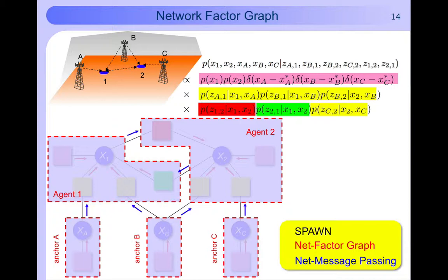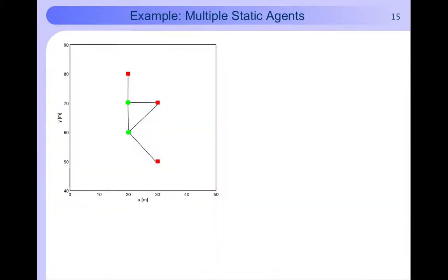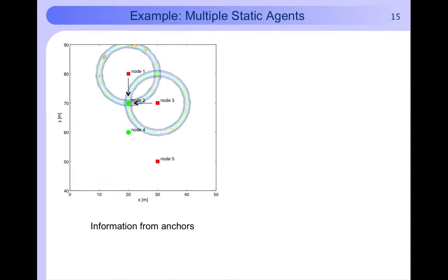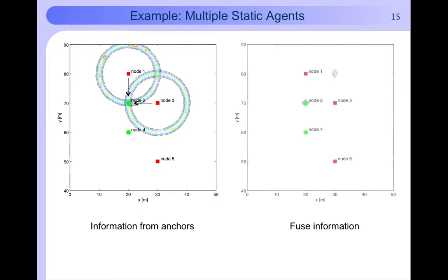Now let us return to our example and see actually what happens. This is the network topology. Agent 2 can communicate with two anchors. Every anchor broadcasts its position. Based on the distance estimate the agent knows it is on a circular distribution around every anchor. The thickness of the distribution depends on the ranging technology. The agent can combine this information based on SPAWN and has the resulting distribution shown as a contour plot on the right. Clearly the agent has an ambiguity.